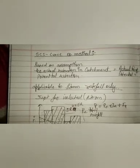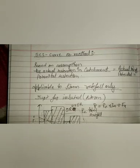In this method, we use a basic assumption: the ratio of actual retention in the catchment to the potential retention is equal to the actual runoff to the potential runoff. In the figure, I have drawn a hyetograph for a given storm duration, delta T. Time is on the x-axis and intensity of rainfall is on the y-axis.